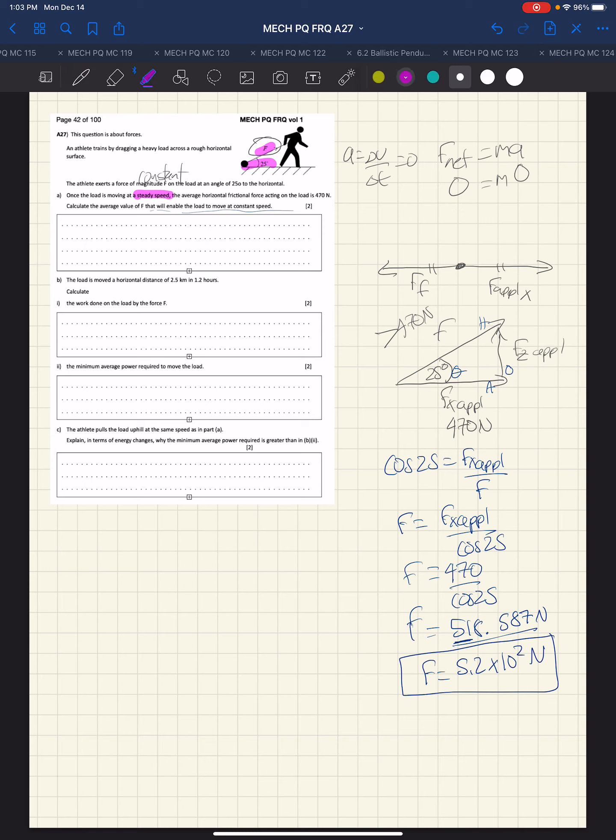In the next question, we are told it's pulled for 2.5 kilometers in 1.2 hours. A couple things should jump out at us: these are non-standard units—kilometers and hours—so we'll have to do some conversion. We simply want to know the work. Work is force times distance.